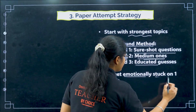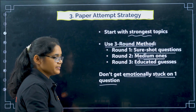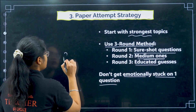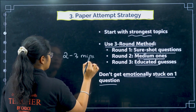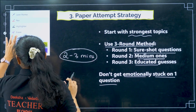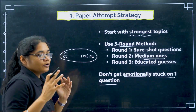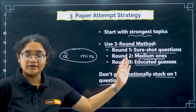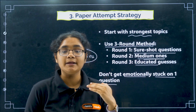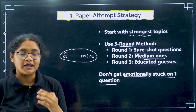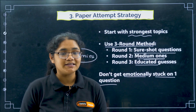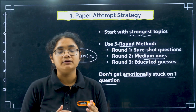Do not get emotionally stuck on one question. In the first and second rounds, do not spend more than two minutes on a single question - that is already on the higher scale. Spending too much time means the clock runs out with questions still pending. Solve all questions within one to two minutes each and keep moving.